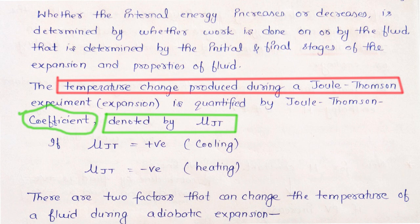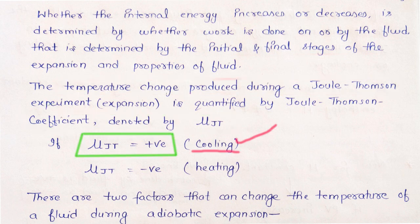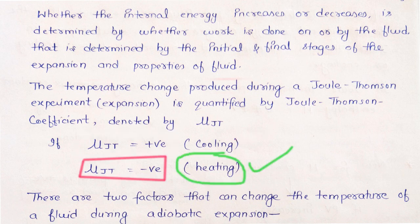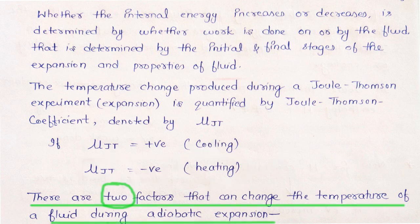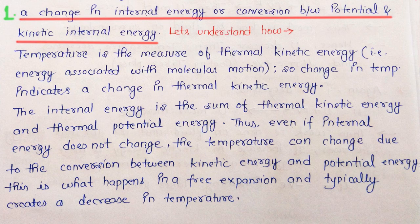The temperature change produced during a Joule-Thompson expansion is quantified by the Joule-Thompson coefficient, जिसको हम μ_JT से denote करेंगे। अगर μ_JT की value positive है तो वहाँ cooling होगी, और अगर μ_JT की value negative है तो वहाँ heating होगी। First factor है change in internal energy, या conversion of potential internal energy into kinetic internal energy।